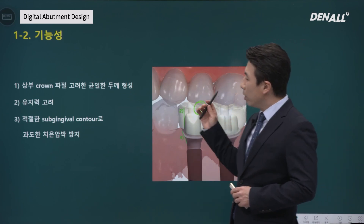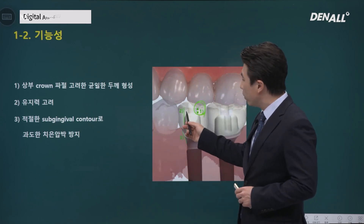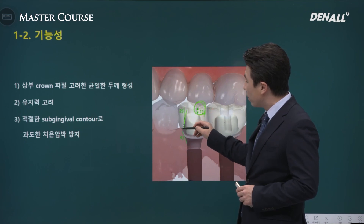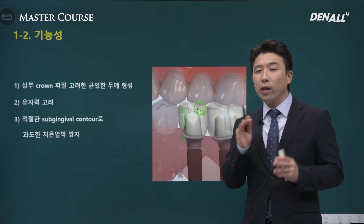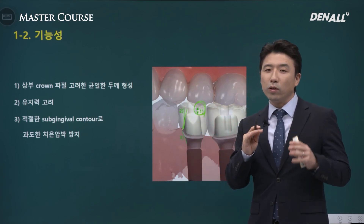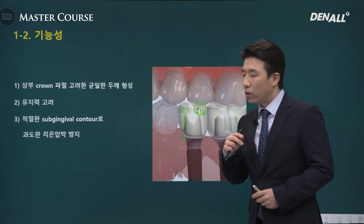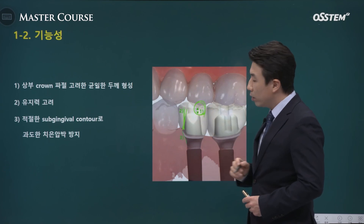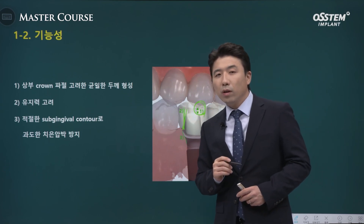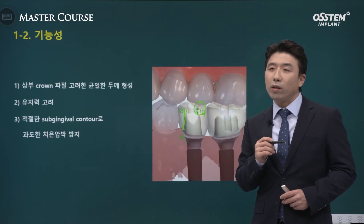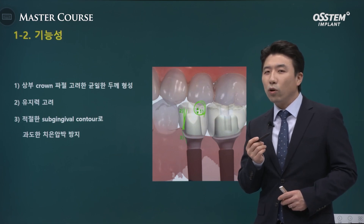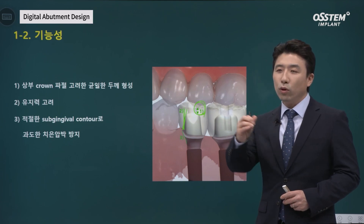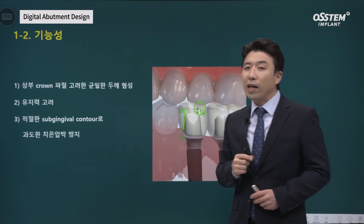Second, you need to consider retention. Moving on to taper of the abutment — if the taper is too significant, retention can be affected. If you reduce the taper and increase the angle, you may think retention improves, but it does not allow for error. With the smallest error in the crown, it will not fit properly.